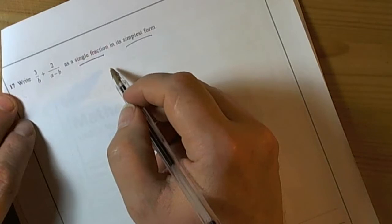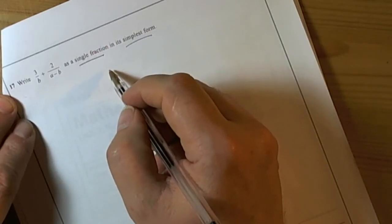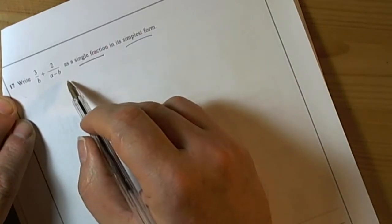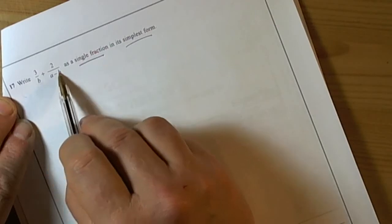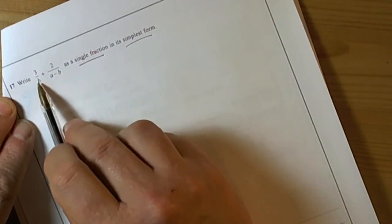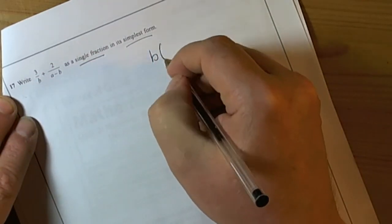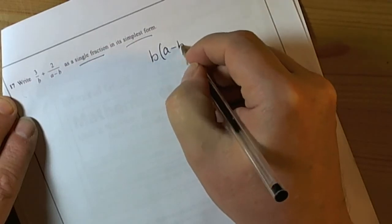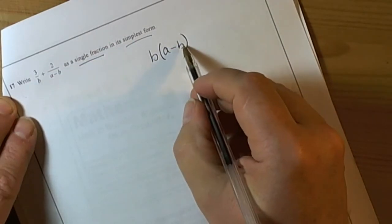Like all fraction questions, we've got to look at the idea of having a common denominator. There's no obvious common denominator, so the quickest way is to multiply the two denominators together. The common denominator is going to be b(a-b).